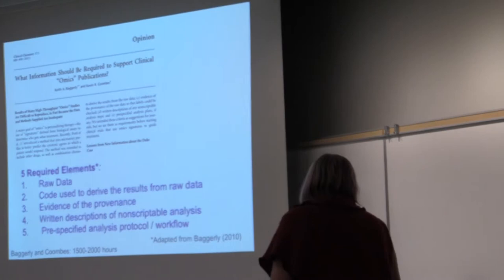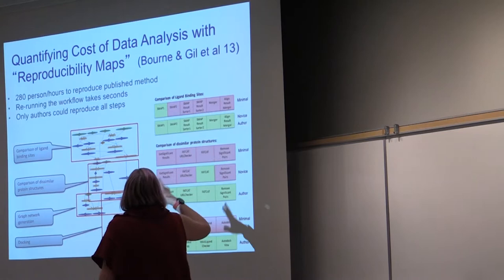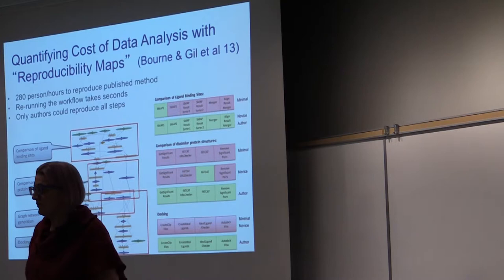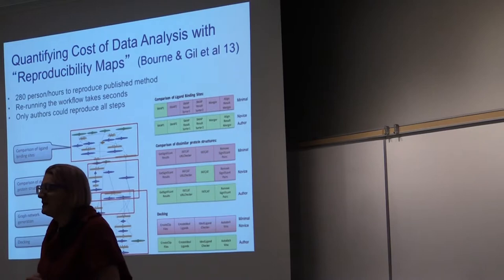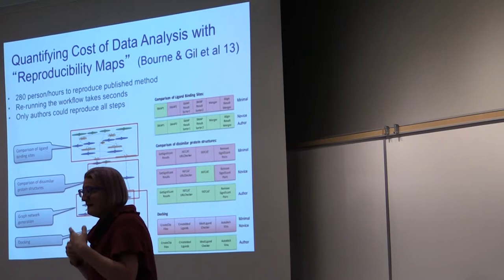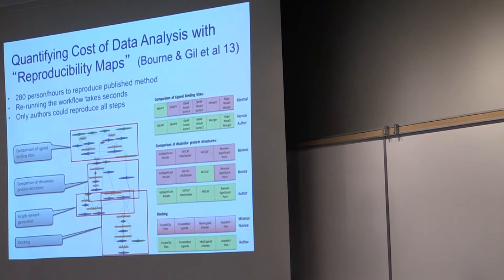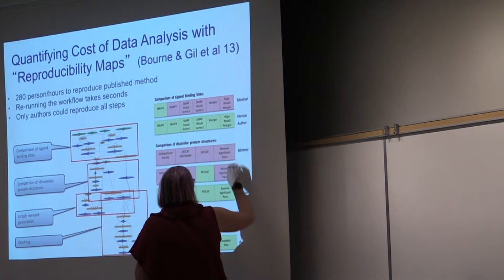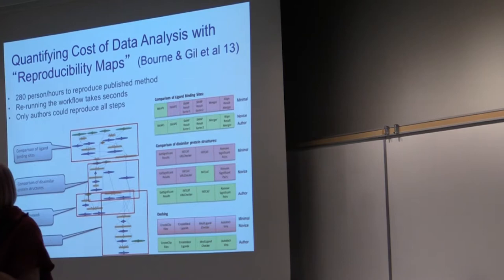We want to go much more beyond that. Phil Bourne and Yolanda Gill did work on what does it take to actually make workflows that are truly reproducible. So Phil Bourne is one of the founding editors of PLOS Computational Biology. His lab is seen by many as the paradigm for open science best practices. They took one of his computational workflows that was published and incredibly well documented and asked, how long would it take to get the exact same result? It took 280 hours. What you'll notice here is the steps that were minimal or almost anyone could do it, a novice or author only. So even there, we're still not capturing some of the steps or decisions that are being made.